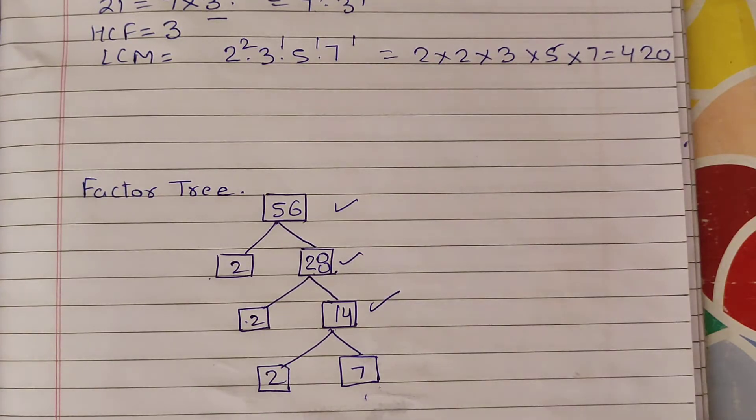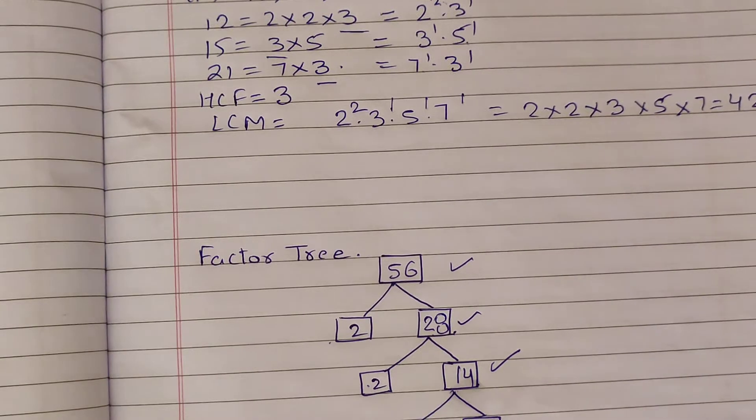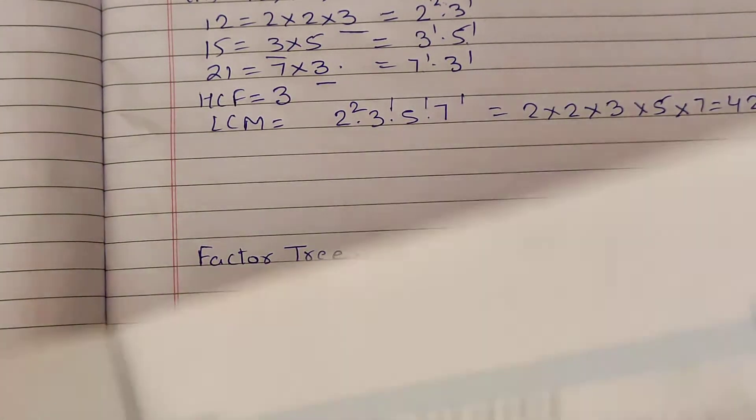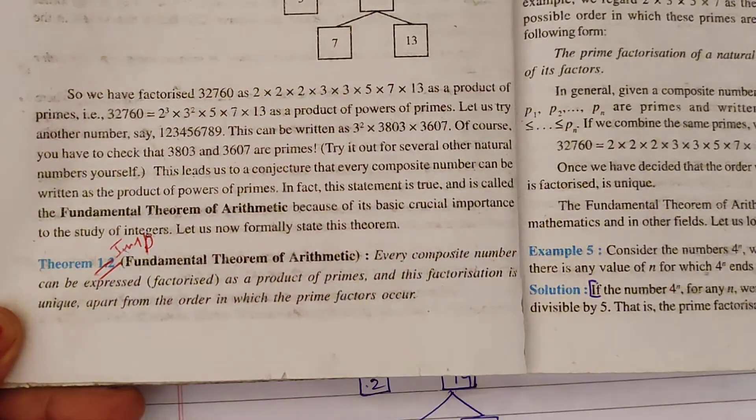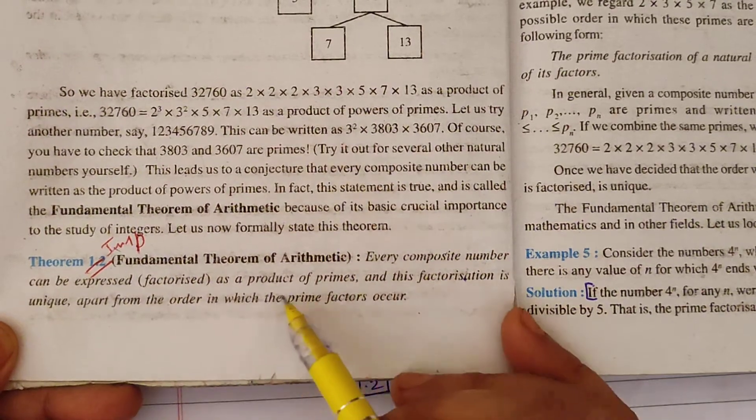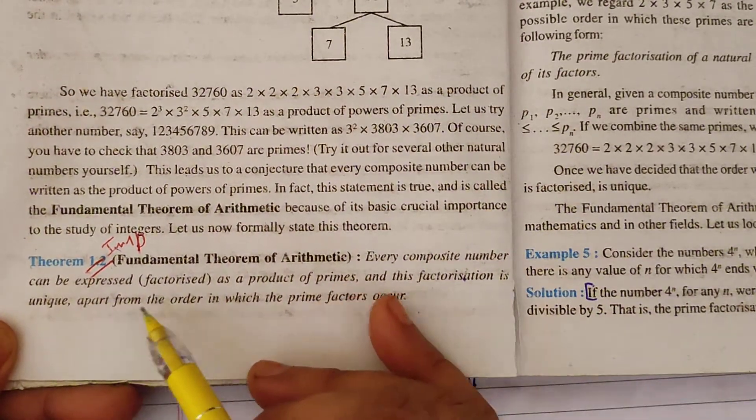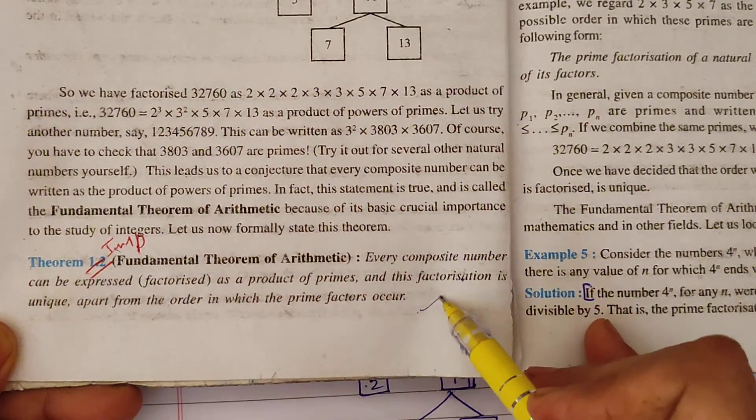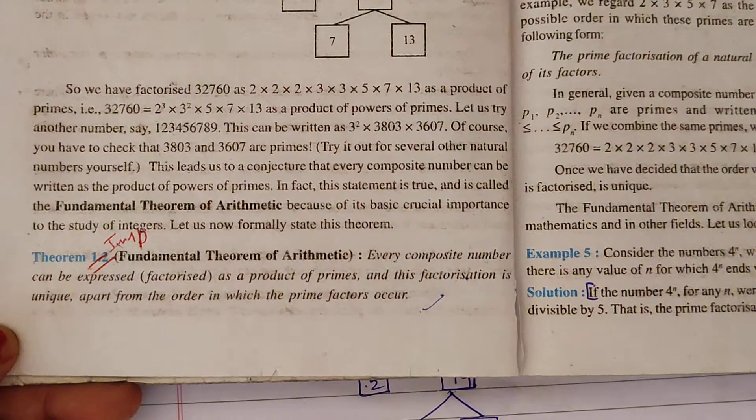Students, today we will do our exercise 1.2 revise. We will talk about composite number. You will know in NCERT, fundamental theorem of arithmetic. You will learn every composite number can be expressed as a product of primes, and its factorization is unique apart from the order in which factors occur. So we will ask you in the paper, fundamental theorem of arithmetic.